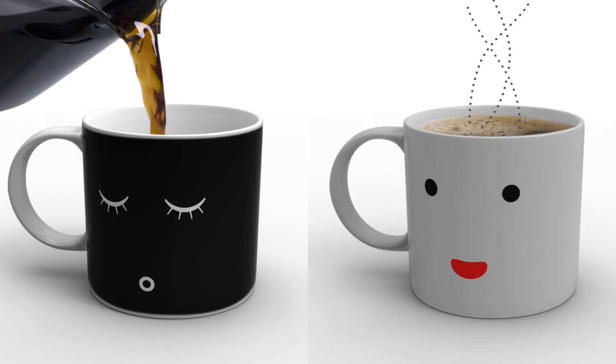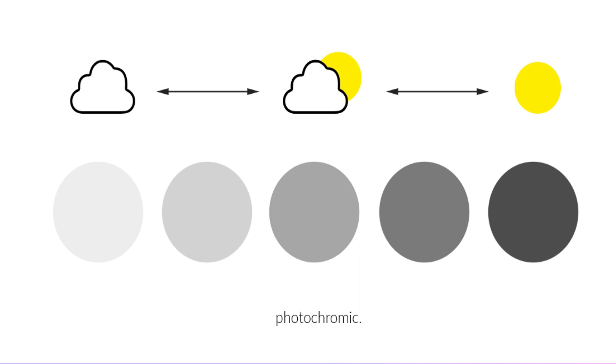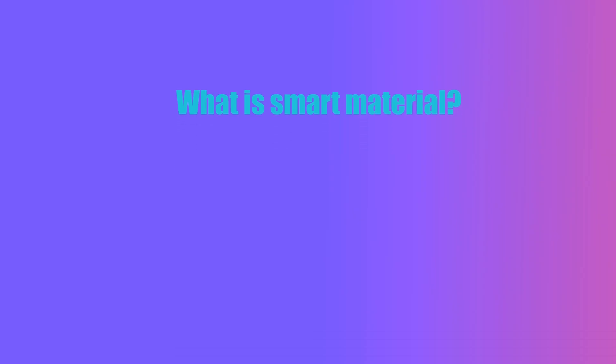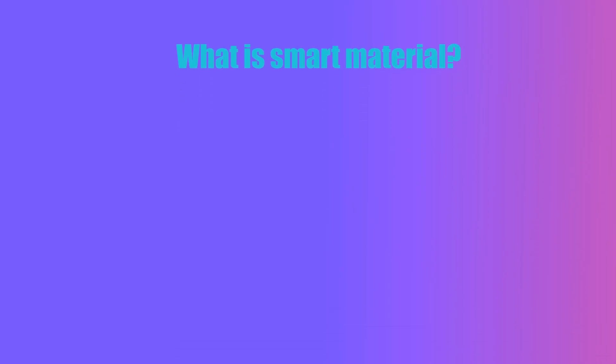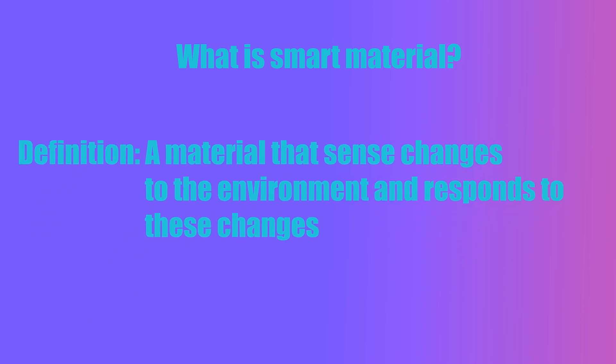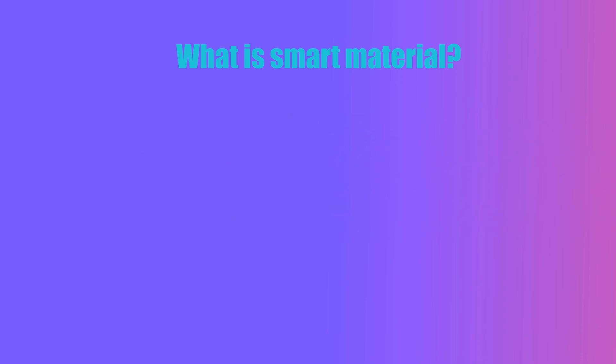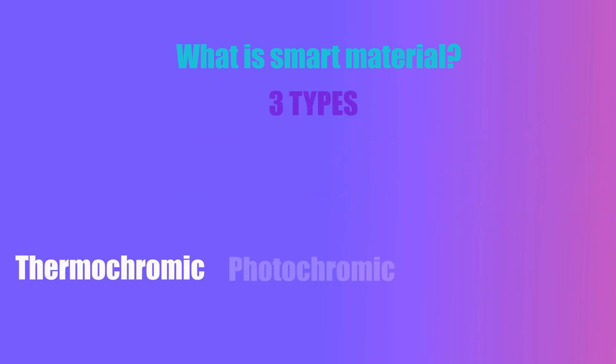Have you ever seen mood rings that change color when hot water is spotted, or lenses that change color under sunlight? These are smart materials. Smart material is a material that senses changes to the environment and responds to these changes. In today's video, I will share 3 types of common smart materials: thermochromic, photochromic, and shape memory polymer.